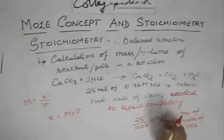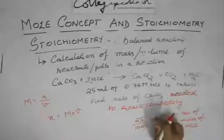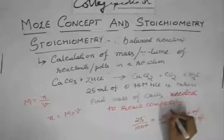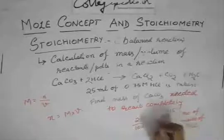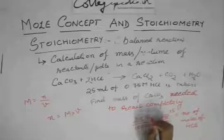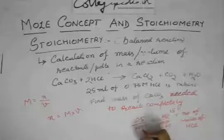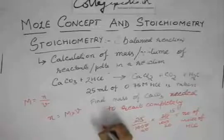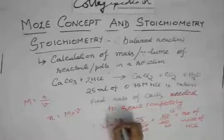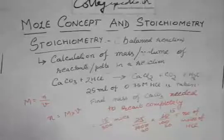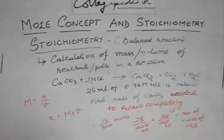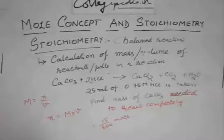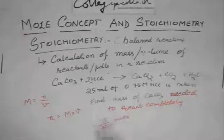So how much does this turn out to be, 75 by 100. So it would be around 15 by 800 sort of moles. Let it be in fractions, you can always calculate it. So this is the number of moles of HCl taken.